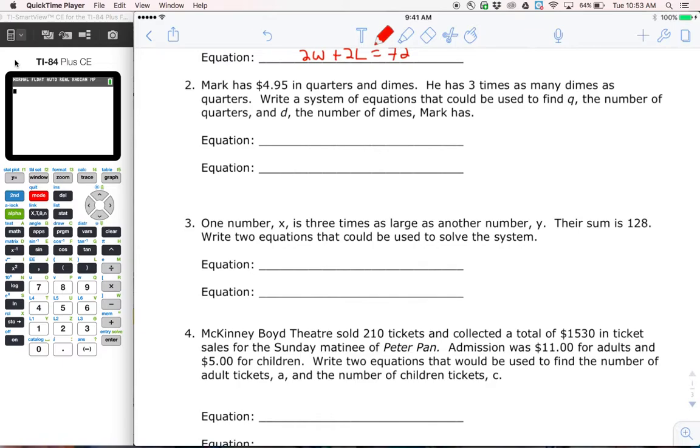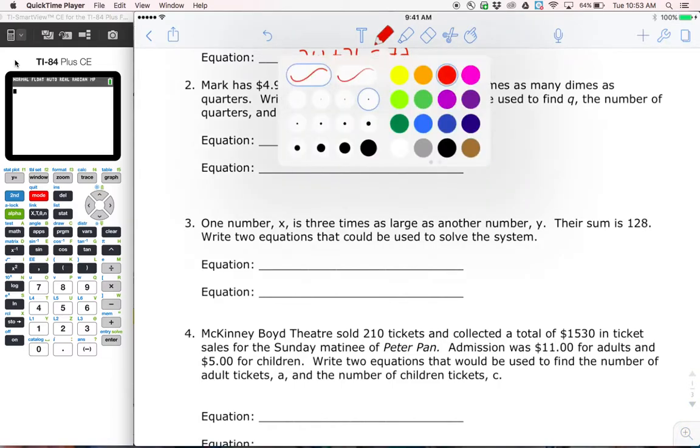Problem two. Mark has $4.95 in quarters and dimes. He has three times as many dimes as quarters, write a system. Off on the side, if you guys would, take a second.